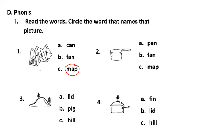Number two. This is a picture of a pan. Now let's read. A, pan, B, fan, C, map. The word I'm looking for is A, pan.